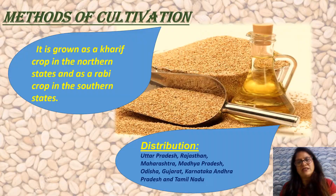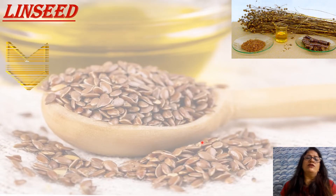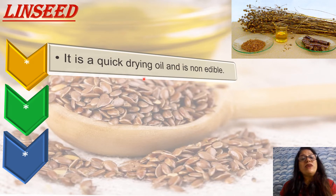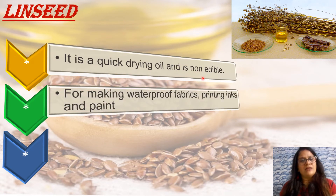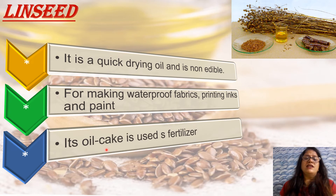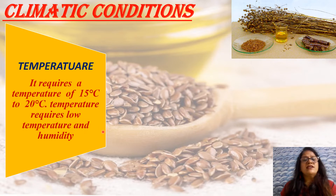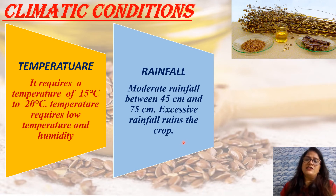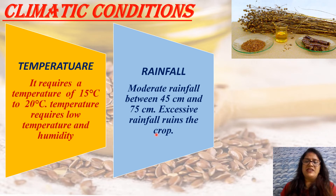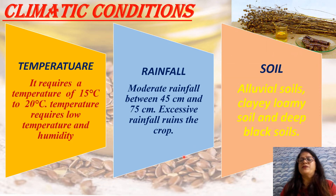Now we will discuss linseed. Linseed is a quick-drying, non-edible oil used for making waterproof fabrics, printing inks, and paint. Its oil cake is used as a fertilizer as well. Climatic condition: it requires a temperature of 15°C to 20°C with low temperature and humidity. Rainfall: 45 to 75 centimeters of moderate rainfall is considered best; excessive rainfall ruins this crop.